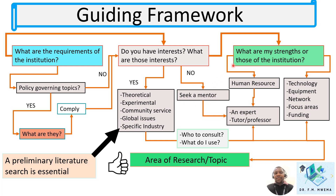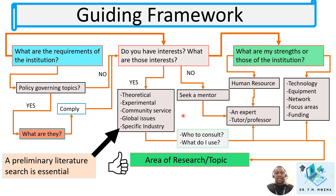Seeking a mentor takes you to the third step. You need to look for a professor in the faculty you are planning to enroll in, or an expert — someone in the industry in the broad area you're working on. Whether you are in mechanical engineering or health, you could talk to a doctor or directly to a professor to guide you and help you identify your interests. A professor can help you identify or even cultivate an interest in research.